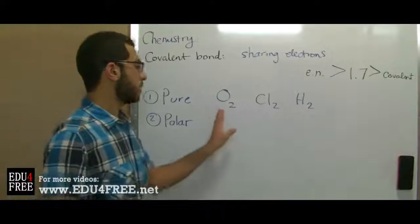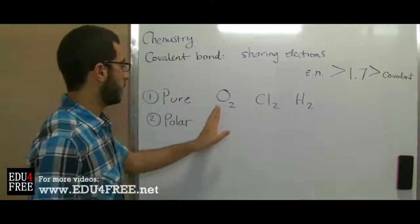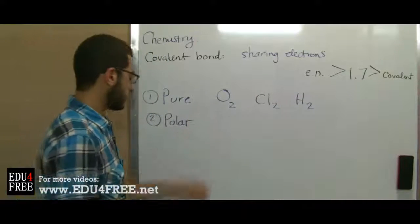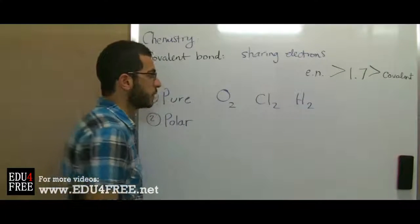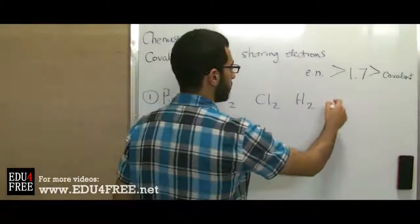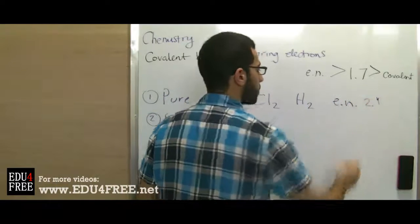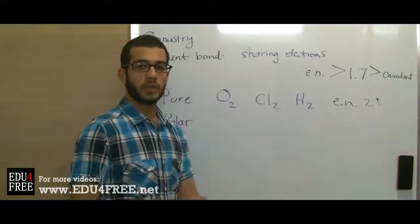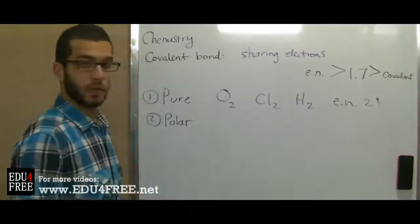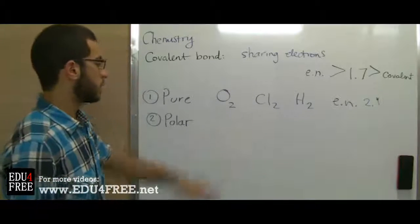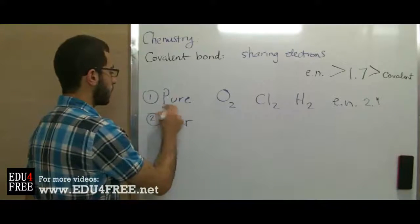So when we try to calculate the electronegativity of each of these molecules, we will find that, for example, in hydrogen, the electronegativity of hydrogen is 2.1. So what we do is 2.1 minus 2.1, we get 0, and so on in other molecules. That's why it's a pure covalent.